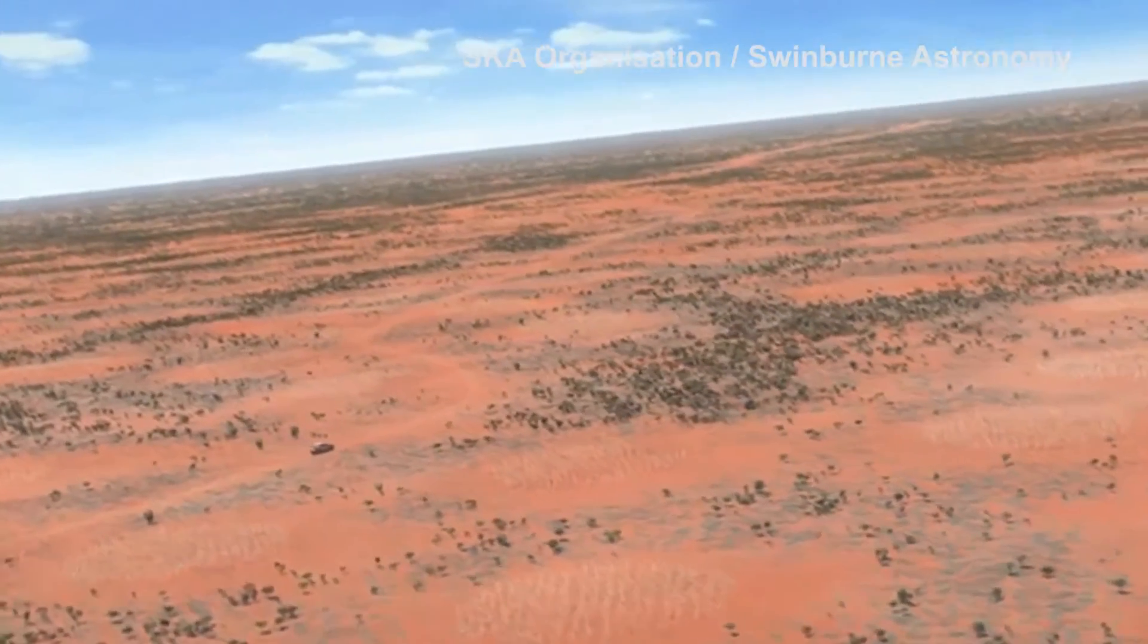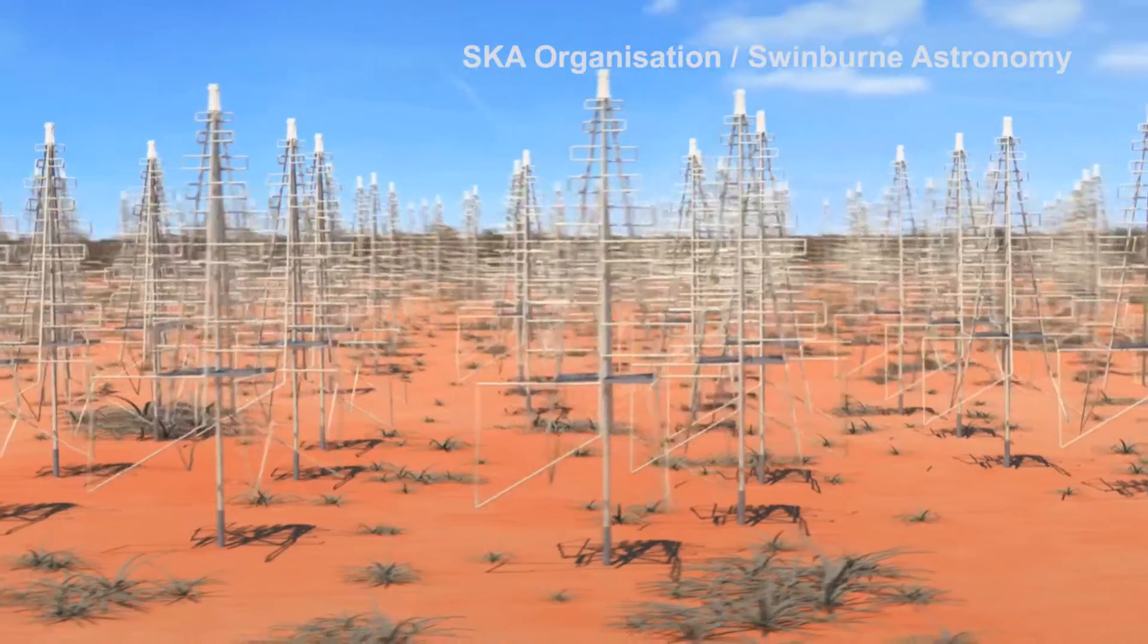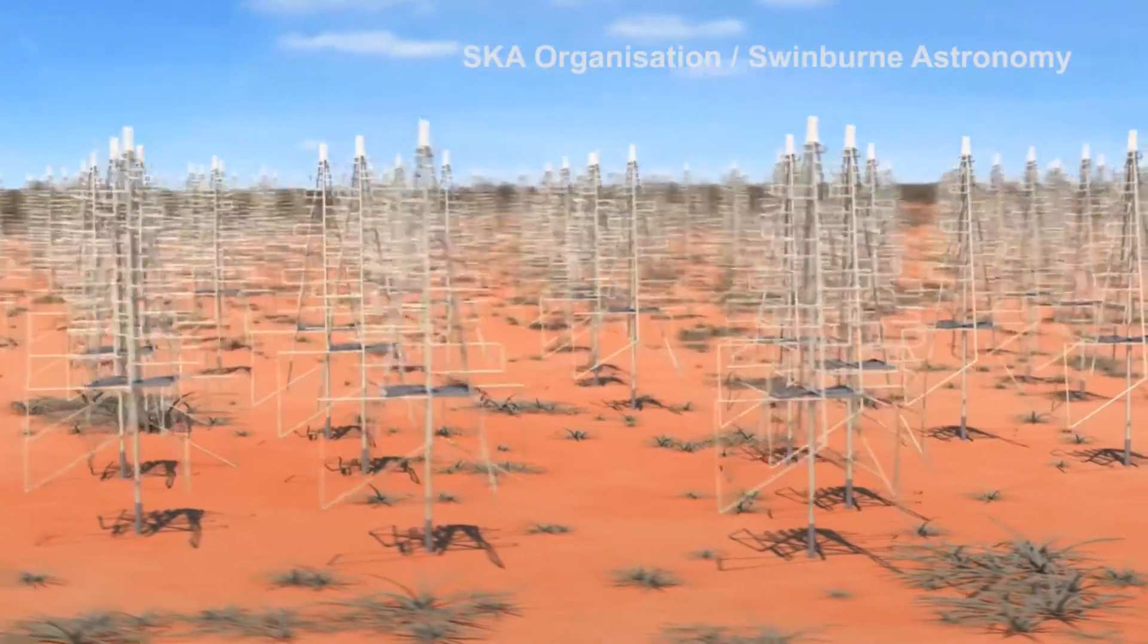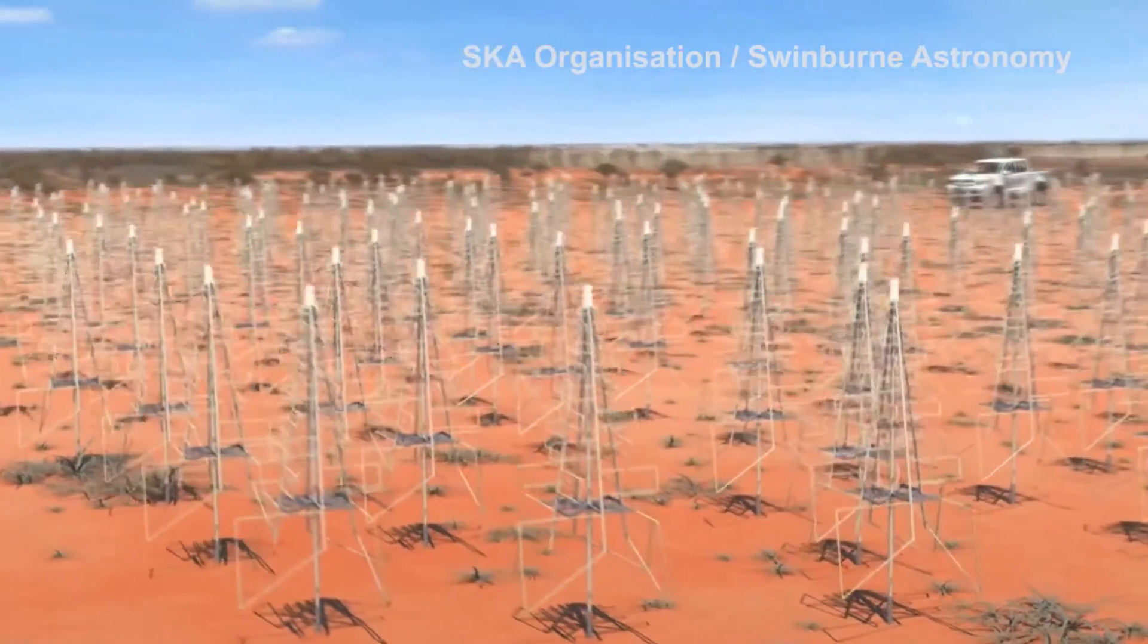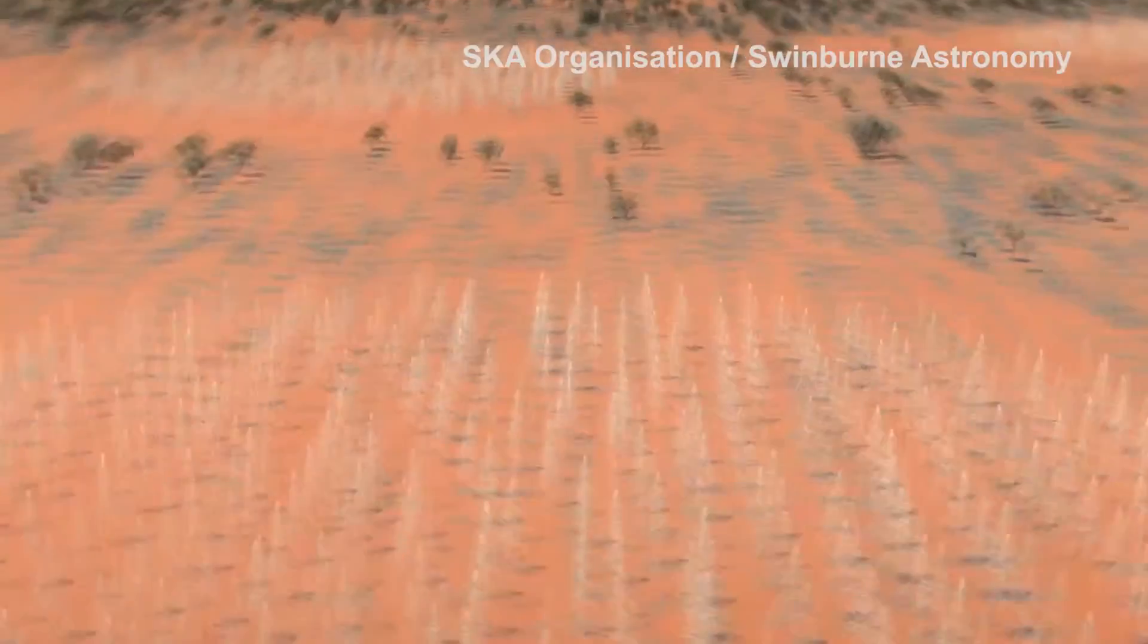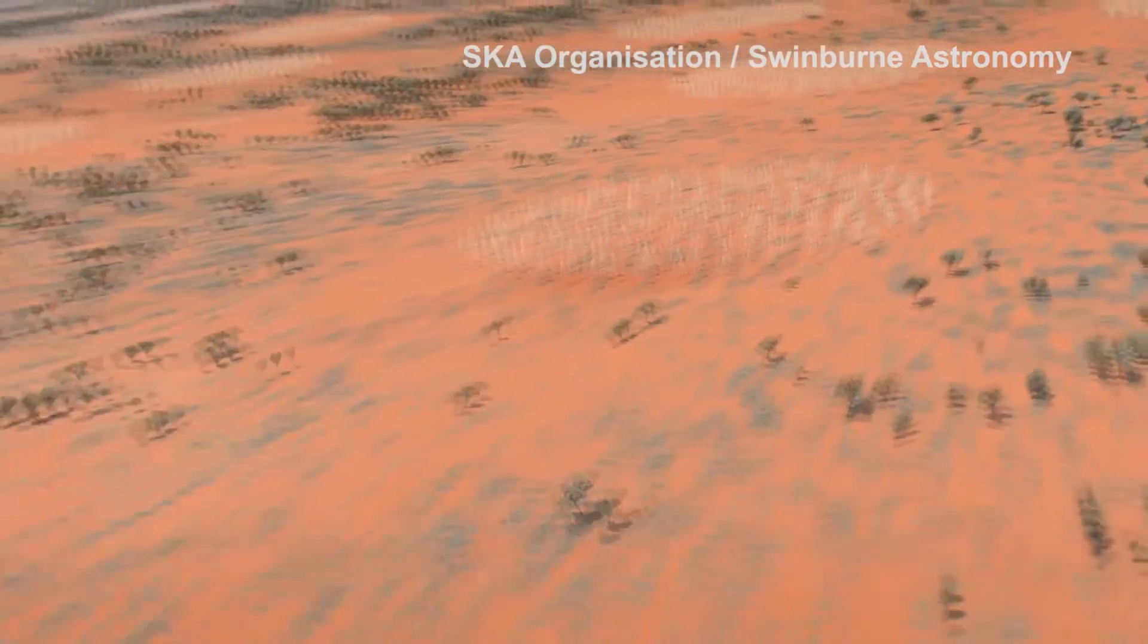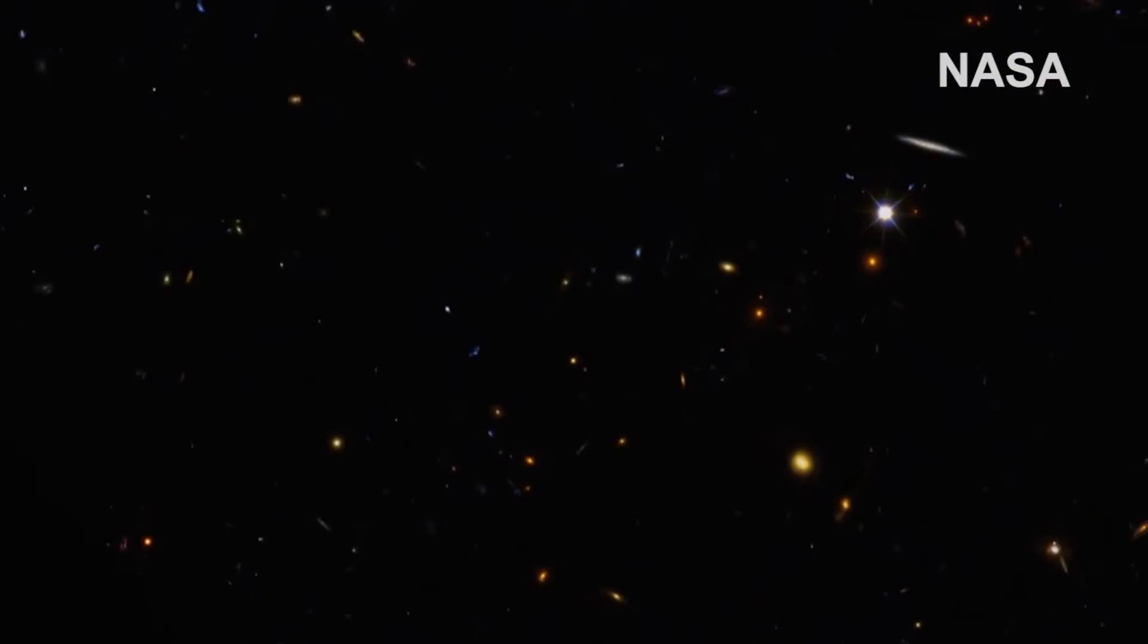The astrophysics group is a member of several large international projects. On the cosmology side, the Murchison Wide Field Array. This is a low frequency radio telescope which is built in Western Australia. The main science goal in that program is the birth of the first stars and the epoch of reionization.